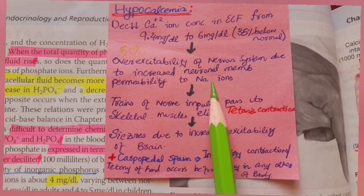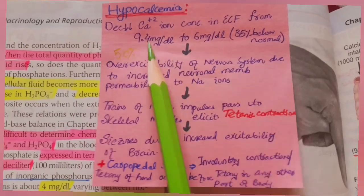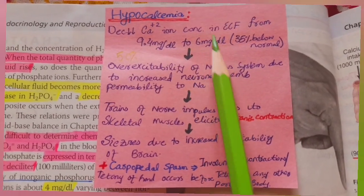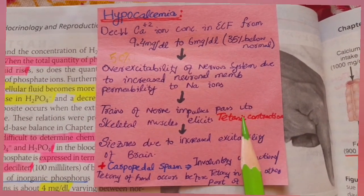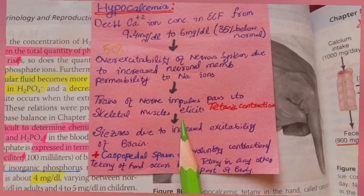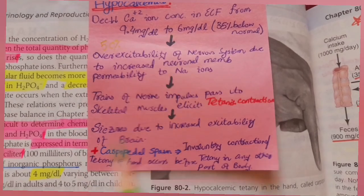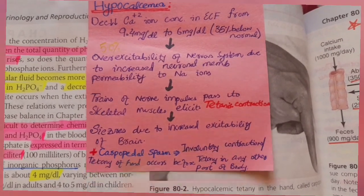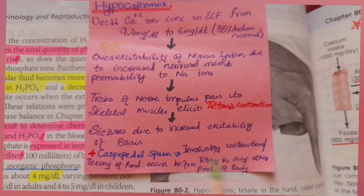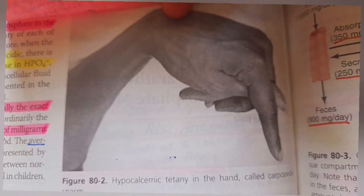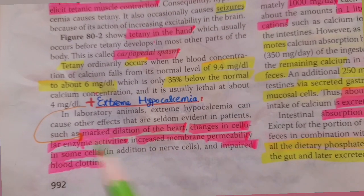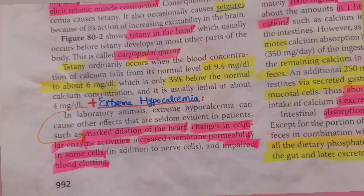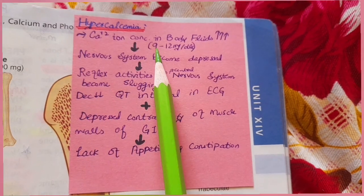When calcium ion concentration decreases to about 6 mg/dL — approximately 35% below normal — trains of nerve impulses pass to skeletal muscles and elicit tetanic contractions, also called tetany. Further decrease results in seizures due to increased excitability. Importantly, involuntary contractions of the hand occur before tetany in any other part of the body; this is called carpopedal spasm. In extreme hypocalcemia there is marked dilation of the heart, changes in cellular enzyme activities, increased membrane permeability, and impaired blood clotting.